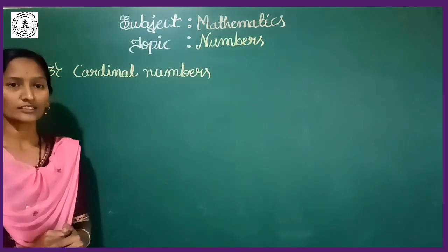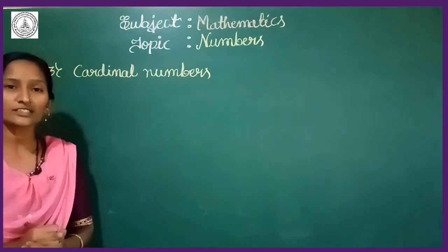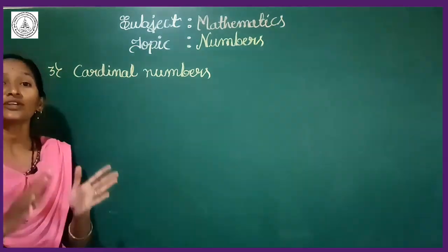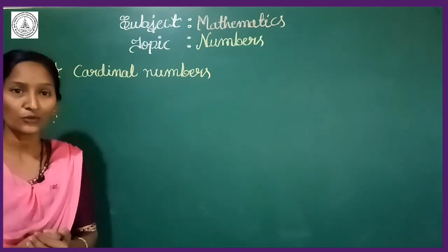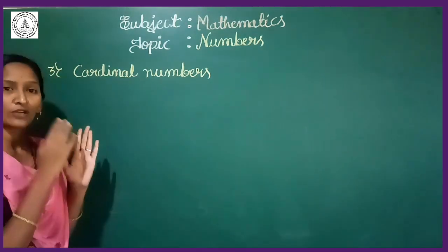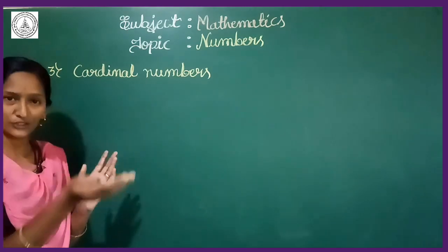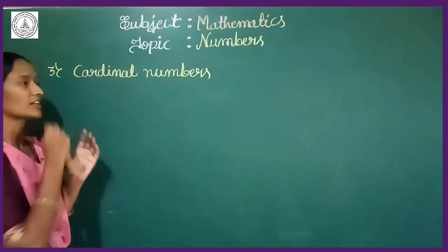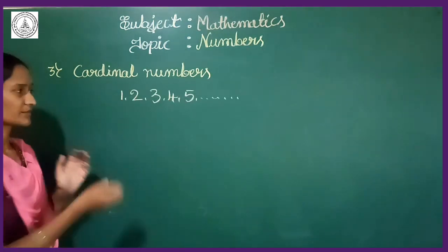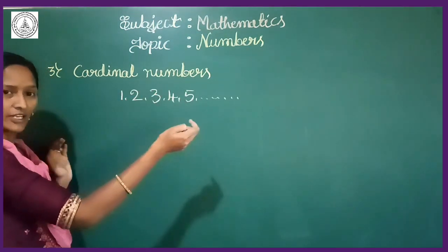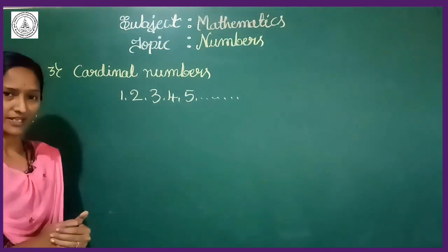Now come to the third type — cardinal numbers. What are cardinal numbers? The counting numbers are called cardinal numbers. The numbers 1, 2, 3, 4, 5, 6, 7 and so on are called cardinal numbers. The counting numbers 1, 2, 3, 4, 5 and so on are called cardinal numbers.